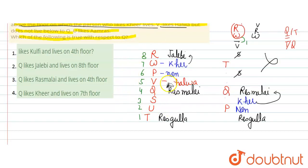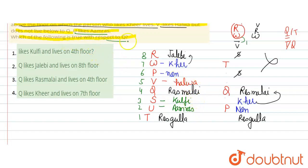This case is eliminated. S aagaya yahaan — S yahan hai aur U yahan hai. U likes amras, so U ke paas aagaya amras. S ke liye ho gaya kulfi. Now the question asks what is correct with respect to Q — Q likes rasmalai and lives on the fourth floor. So this is the correct answer.